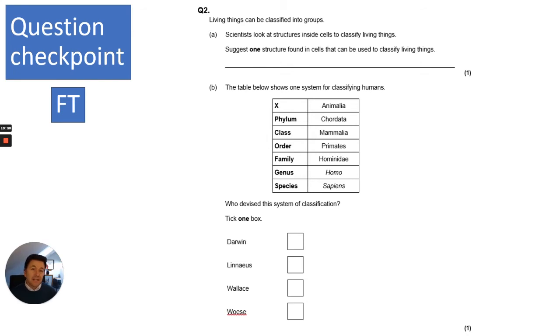Question two, again this is foundation tier. Scientists look at structures inside cells to classify living things. I'd like you to pause it, read it, answer it, and then we'll go through it in three, two, one. The first thing is this is related to your knowledge of cell biology. It's saying suggest one structure found in cells that can be used to classify living things. That will be anything like the nucleus that has DNA, or mitochondria, or ribosomes, so anything with DNA in it or proteins.